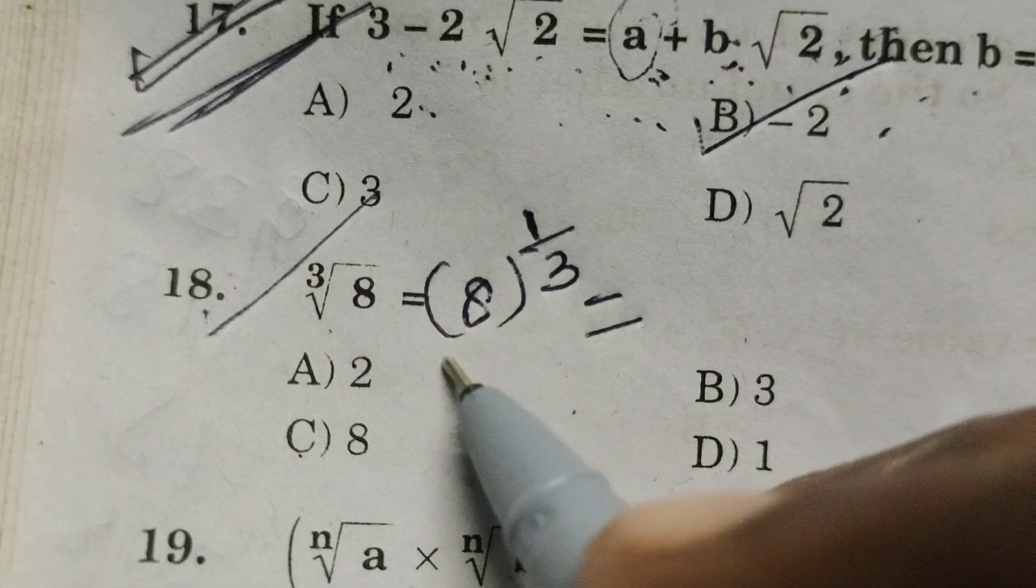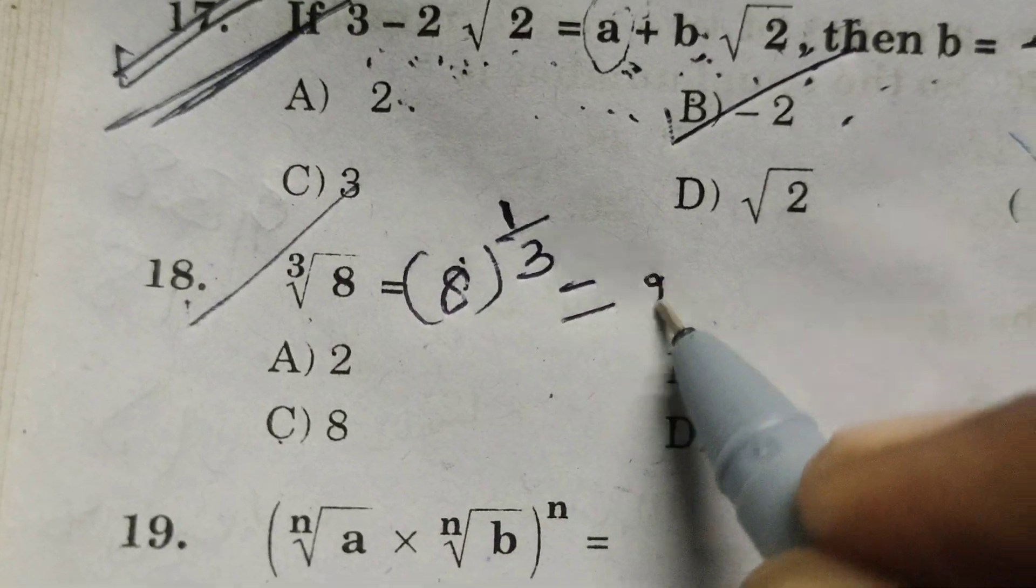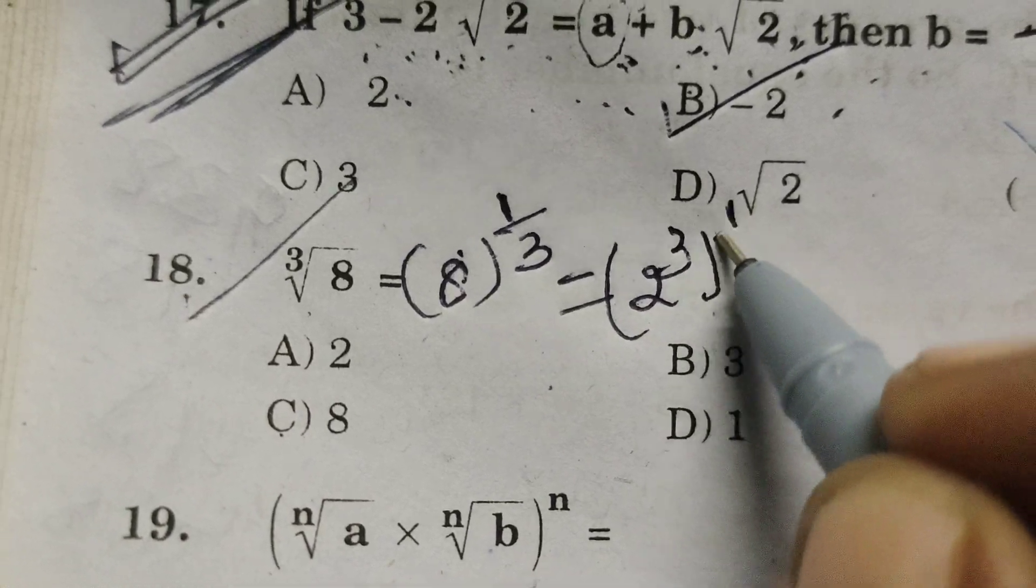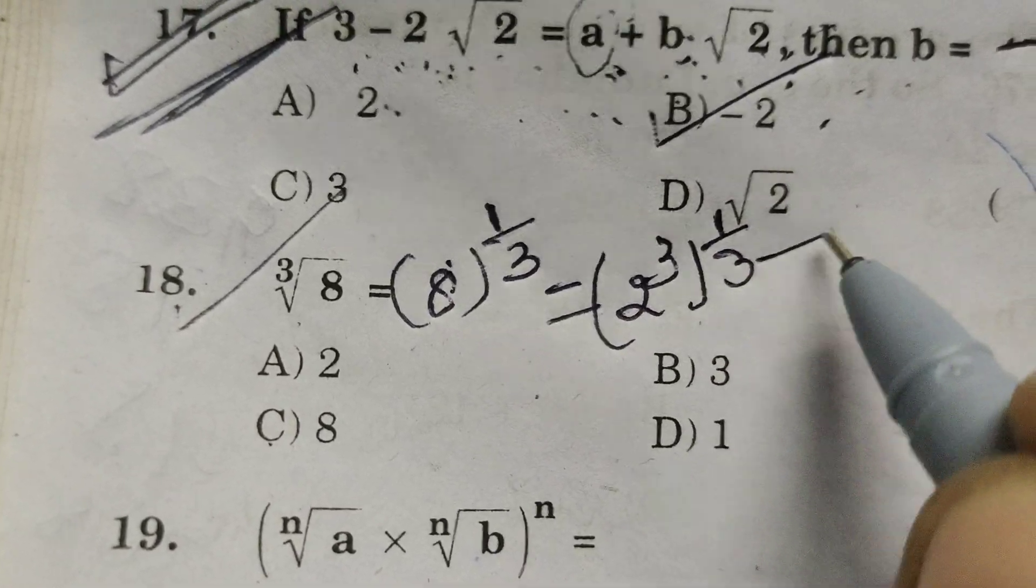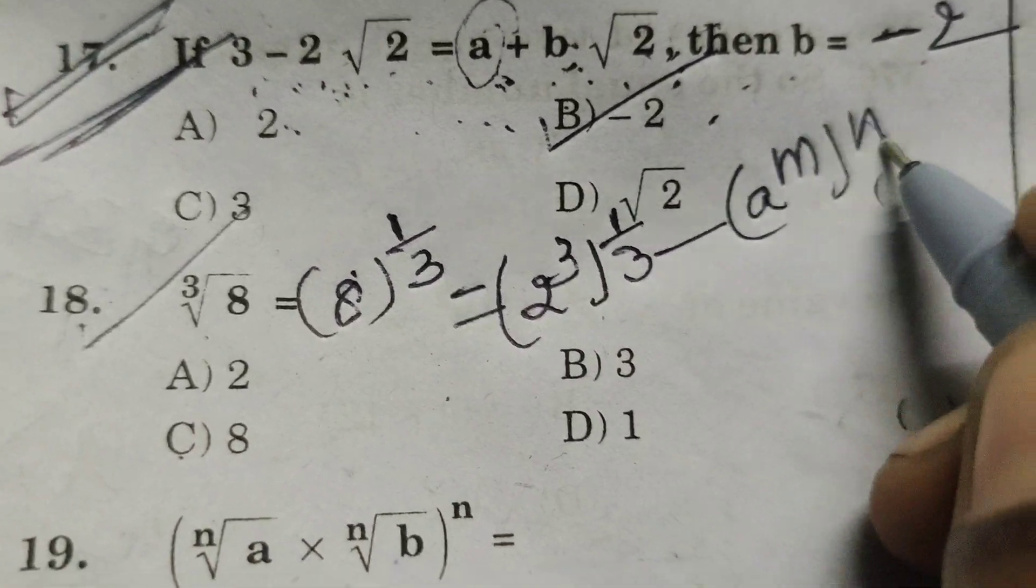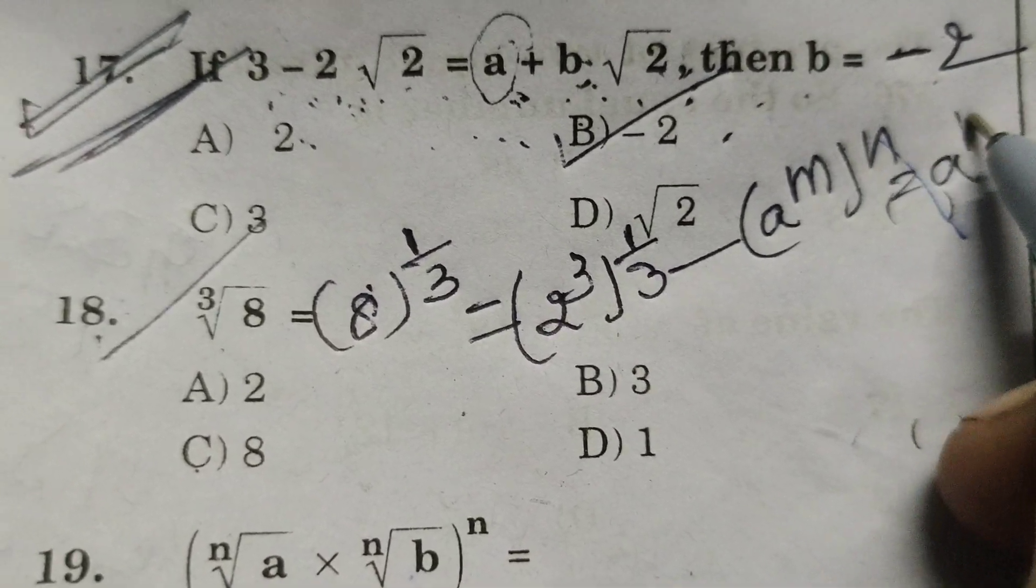Again write 8 means 2 cube whole power 1 by 3. Here applying the formula A power m whole power n, that is A power mn.